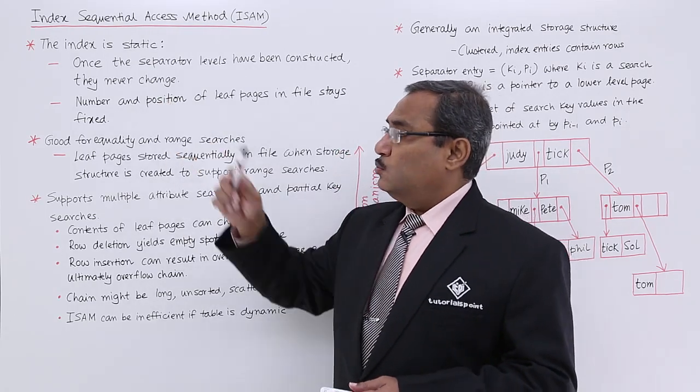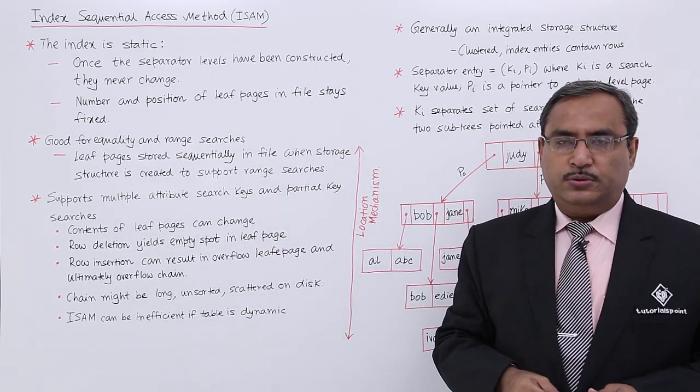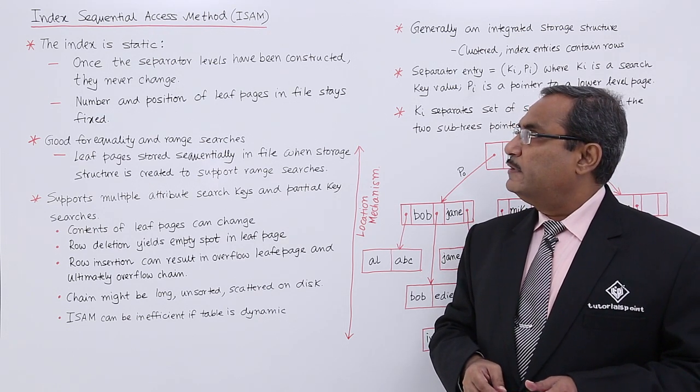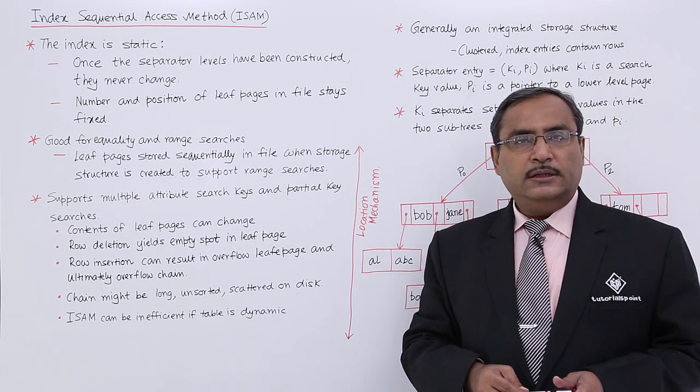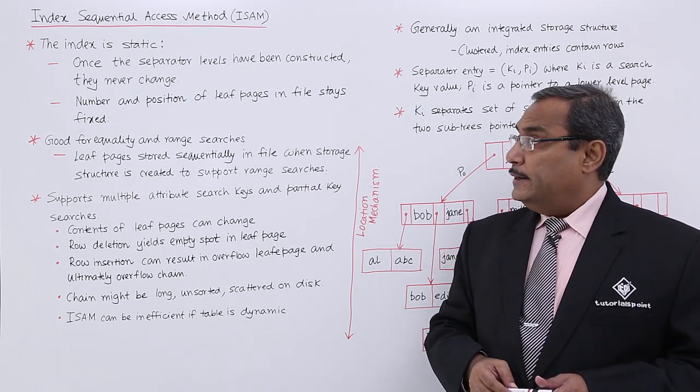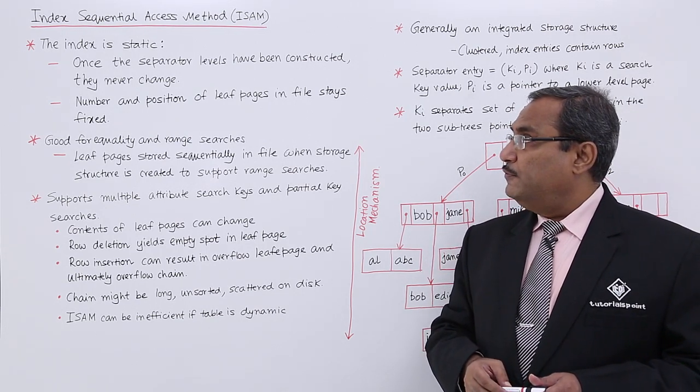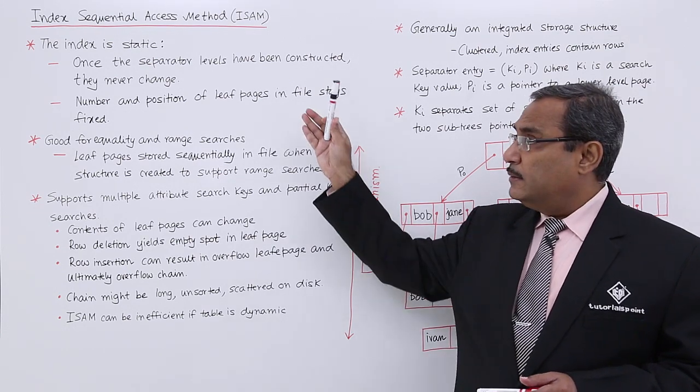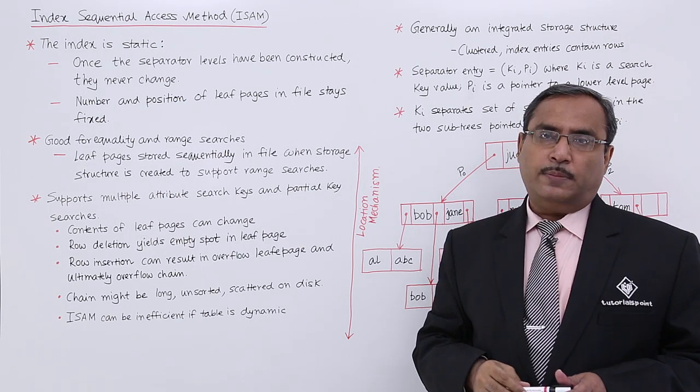This is one index structure which is static in nature. That means, once the separated levels have got constructed, they will not change. Number and position of leaf nodes in the file stays fixed, so these are the mainly two points in case of ISAM.